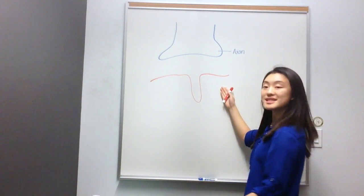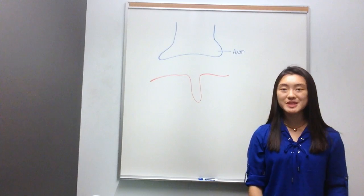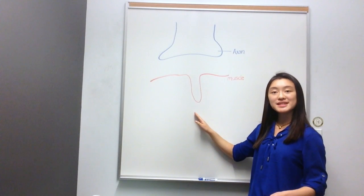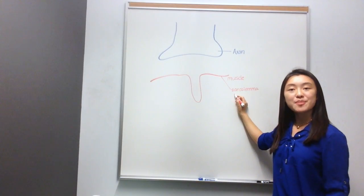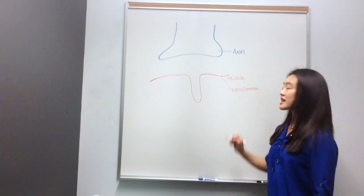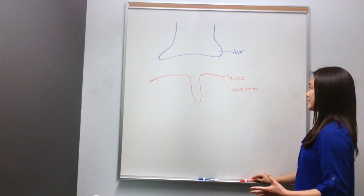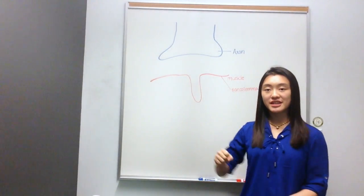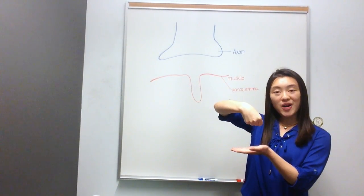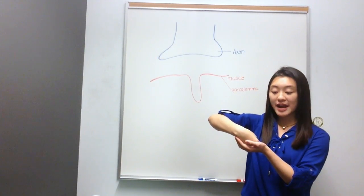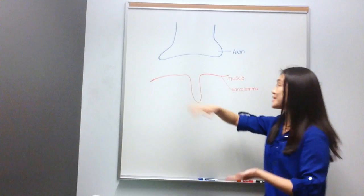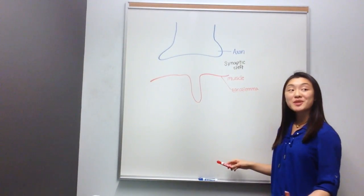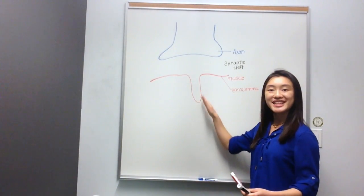I'll label it axon. And this here is the muscle — in our case, it's the quadriceps, which is the muscle in the thigh. The membrane of a muscle cell is called the sarcolemma, and the prefix 'sarco' comes from the Latin word for flesh. It's very important to note here that the axon and the muscle cell are not touching — there's a gap between the two parts. This gap, the empty space, is known as the synaptic cleft.